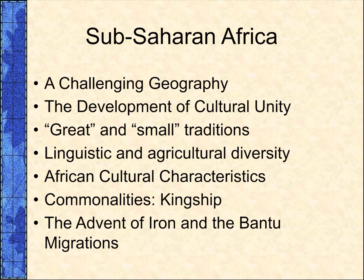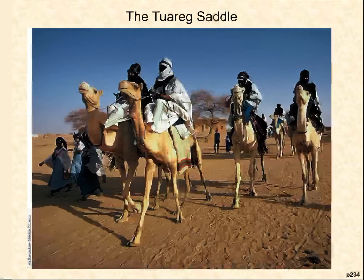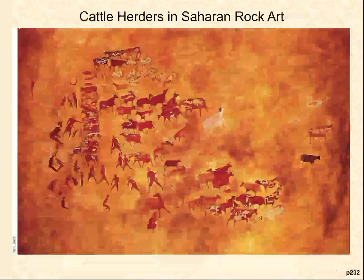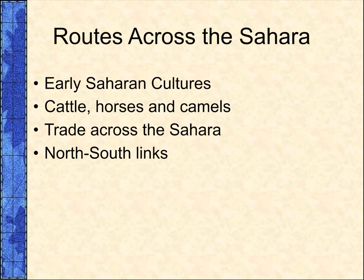Trade across the Sahara developed slowly when two local trading systems — one in the southern Sahara and one in the north — were linked. Traders in the southern Sahara had access to desert salt deposits and exported salt.